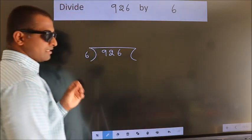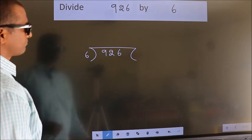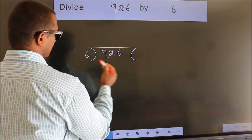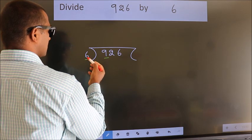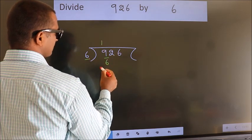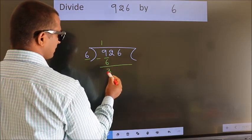This is your step 1. Next, here we have 9, here 6. A number close to 9 in 6 table is 6 once 6. Now, we should subtract. We get 3.